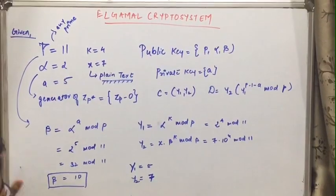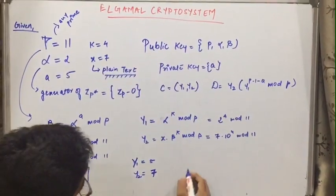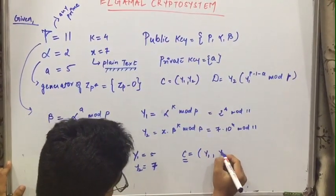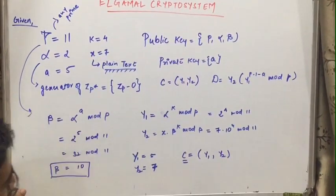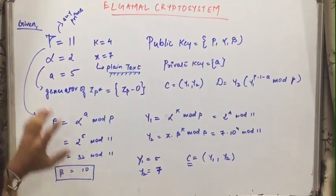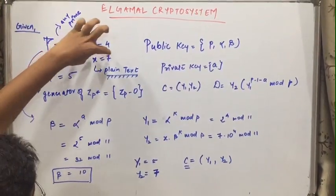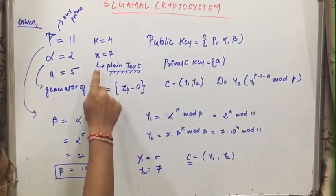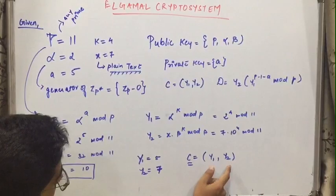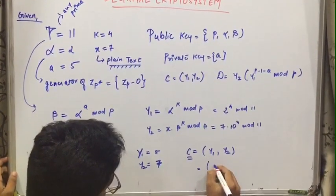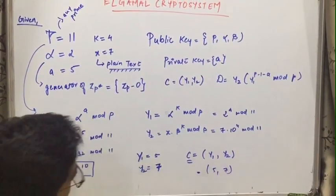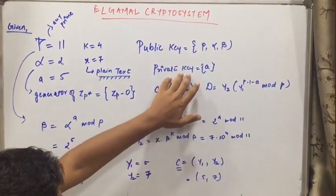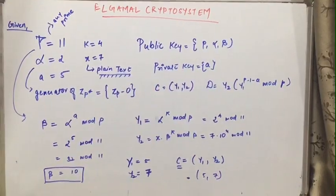Calculate it yourself. Now this is what we did as an encryption. This is a ciphertext which we divided into two parts that is y1 and y2. So this was all about encryption. Now let's do decryption. And yeah, one thing this 7 we took that is a plaintext. So we encrypted this 7 as y1 and y2 which is a part of ciphertext. That is 5 and 7. So this will be sent to the Bob and Bob will decrypt this message using the private key. So now let's decrypt this message.